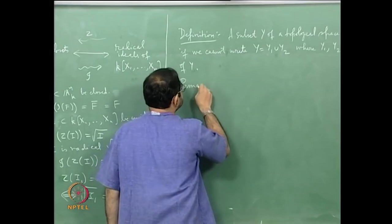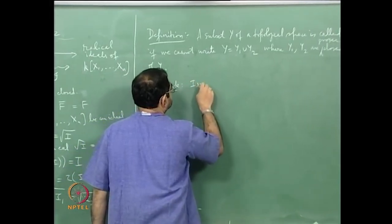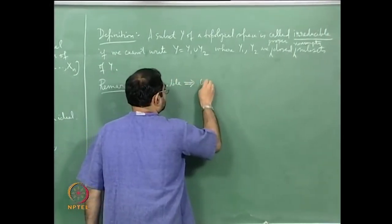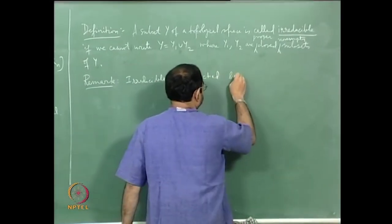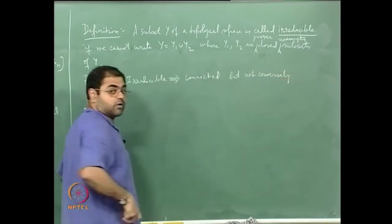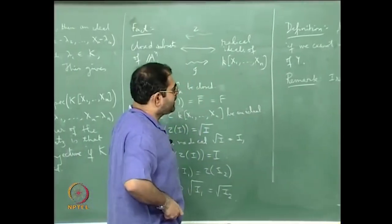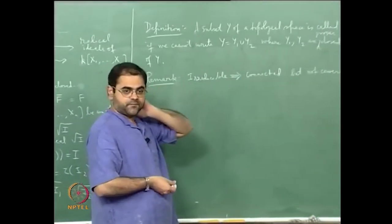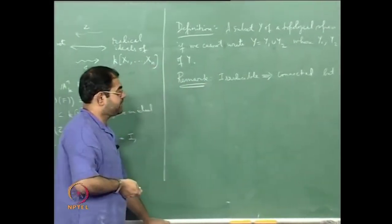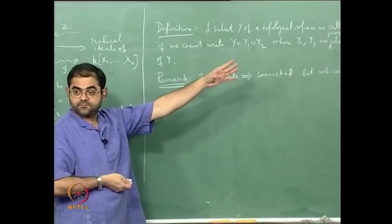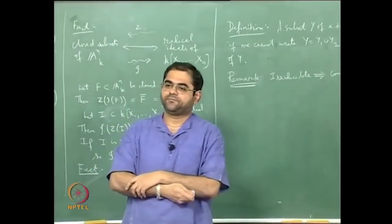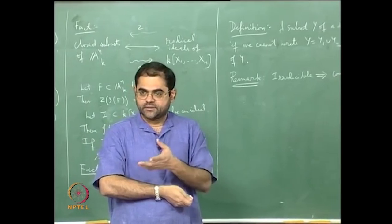Irreducible implies connected, but not conversely. Irreducibility is a very strong form of connectedness. One can expect that some properties true of connected sets also hold for irreducible sets. For connected sets, if a set is connected then its closure is also connected — this is a simple exercise in topology.